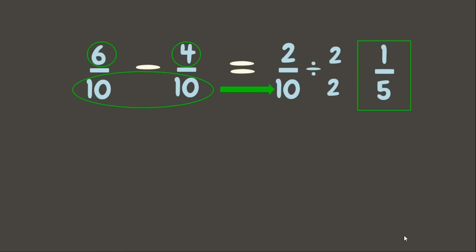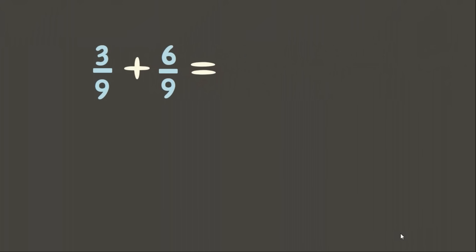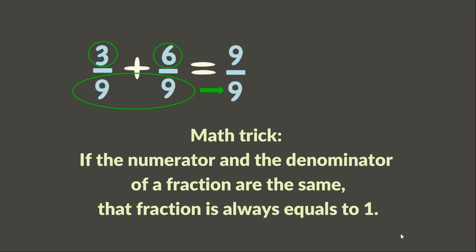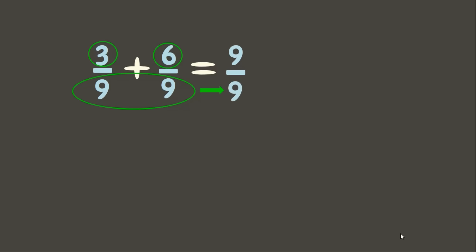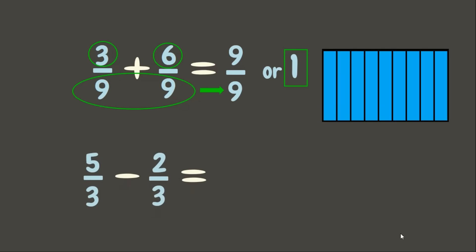Let's have another example: three-ninths plus six-ninths. Three plus six equals nine; copy the denominator, nine. We can see that the numerator and the denominator are the same — if they are the same, the fraction always equals one. A whole divided into nine equal parts where nine parts are taken equals one.